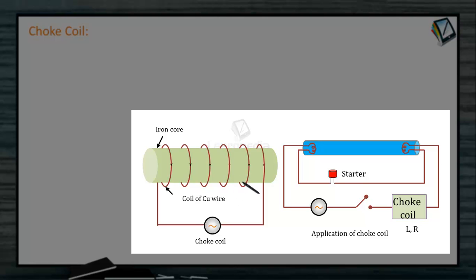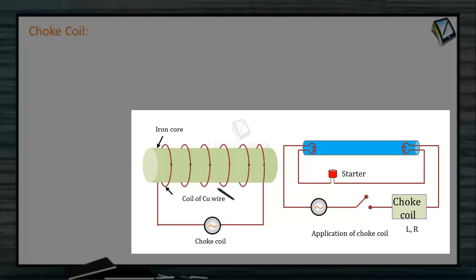A choke coil is a coil of insulated copper wire which offers high reactance ωL to AC but a low DC resistance, thus reducing the AC appreciably without loss of energy. It consists of a copper coil wound over a soft iron laminated core. Thick copper wire is used to reduce the resistance R of the circuit, while soft iron is used to improve the inductance of the circuit.